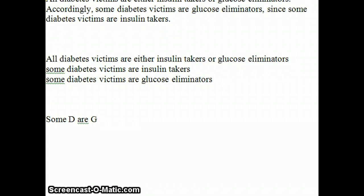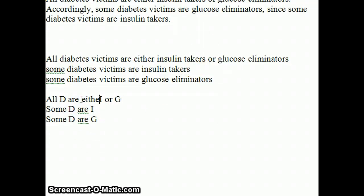One of the premises is going to be some D are I. Now this one is a little funky, because I've got 'all diabetes victims are either insulin takers or glucose eliminators.' I is insulin takers and G is glucose eliminators, so I've got all D — which is diabetes victims — are either I or G. So the form is: All D are either I or G. Some D are I. Therefore, some D are G.